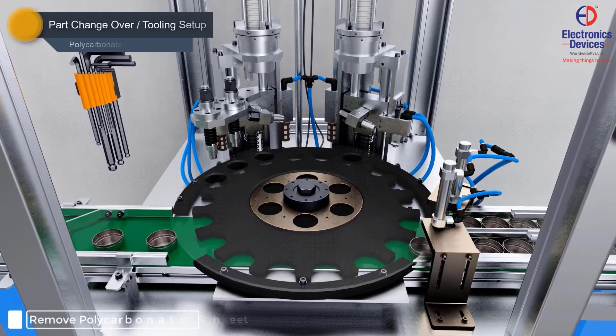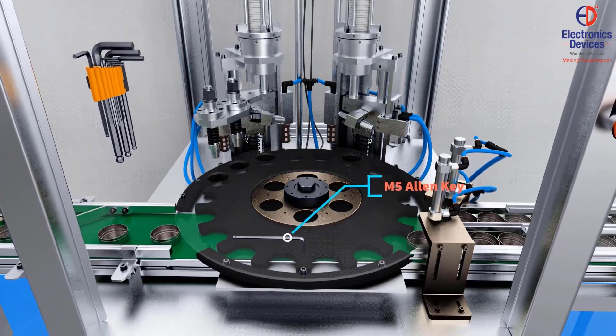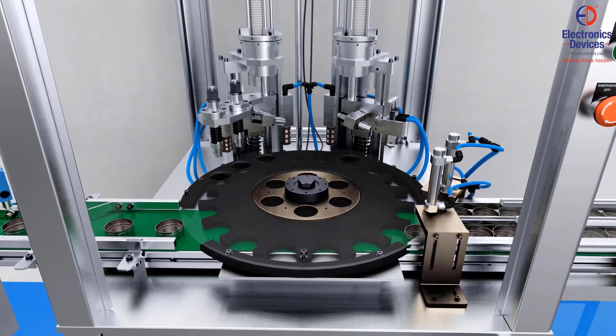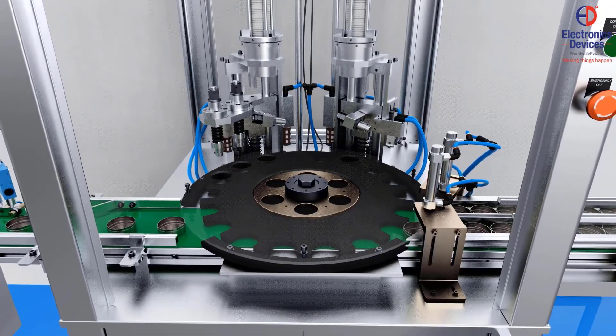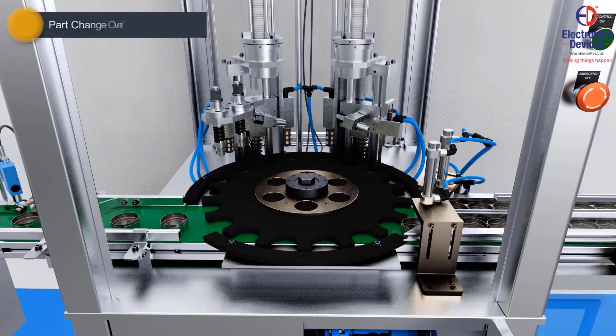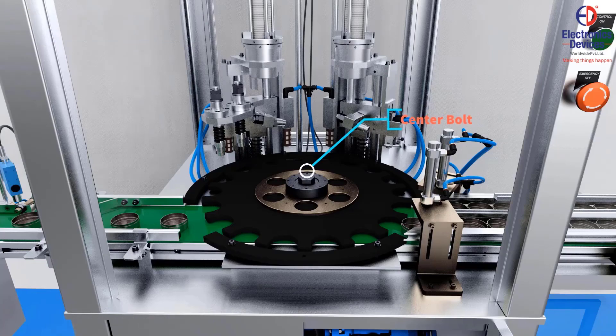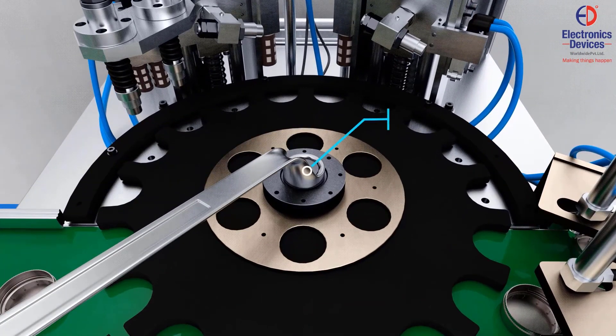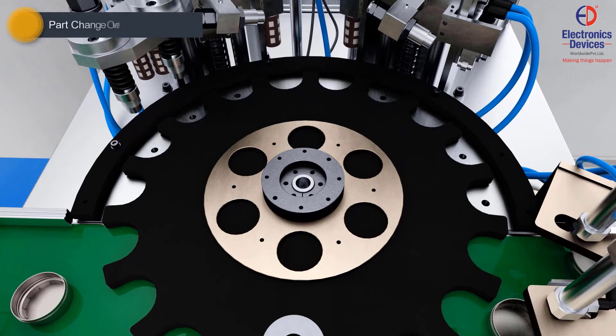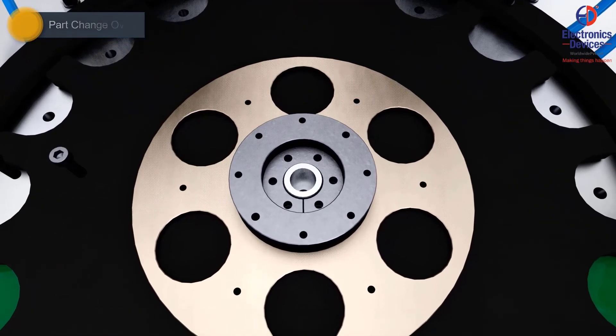Remove the polycarbonate sheet. Now, unscrew and remove the center bolt. Remove the taper lock with the help of two allen key bolts.